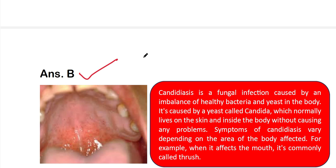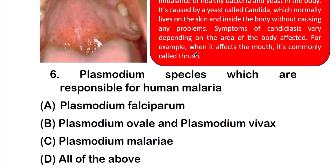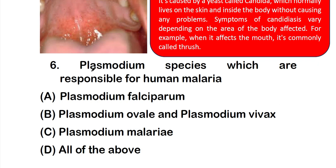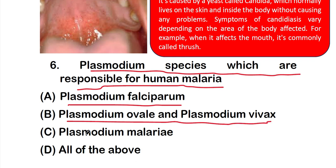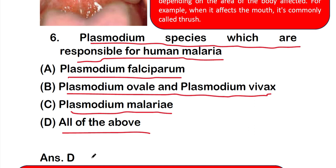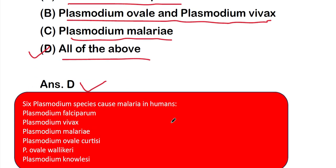Question 6: the Plasmodium species responsible for human malaria — option A: Plasmodium falciparum, option B: Plasmodium ovale and Plasmodium vivax, option C: Plasmodium malariae, or option D: all of the above. The right answer is option D, all of the above. All listed Plasmodium species are responsible for human malaria.